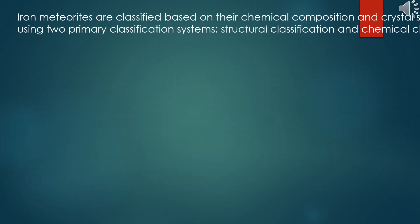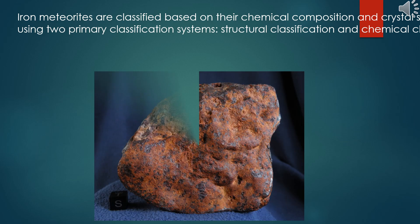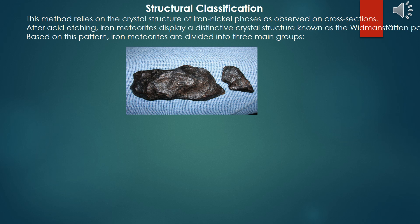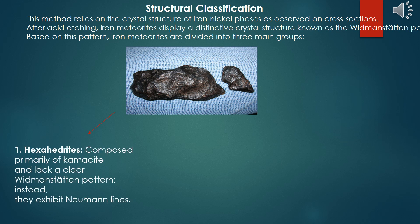Iron meteorites are classified based on their chemical composition and crystal structure, using two primary classification systems: structural classification and chemical classification. Structural classification relies on the crystal structure of iron-nickel phases as observed on cross-sections. After acid etching, iron meteorites display a distinctive crystal structure known as the Widmannstätten pattern. Based on this pattern, iron meteorites are divided into three main groups: 1. Hexahedrites, composed primarily of kamacite and lacking a clear Widmannstätten pattern; instead they exhibit Neumann lines.